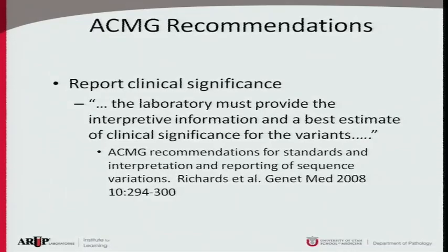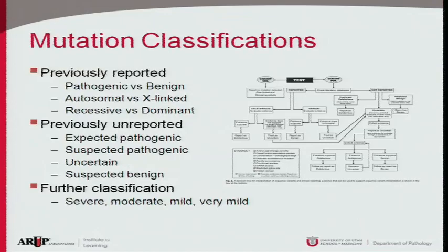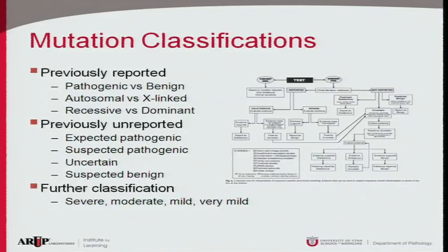The algorithm on the side here comes from that paper and it's fairly complex, so I'll try to simplify it. Basically, we look to see if a variant has been previously reported, and if so, whether it's pathogenic, benign, or somewhere in between. I can't emphasize enough that in a clinical lab we're dealing with many different diseases and many different genes, each with their own quirks.